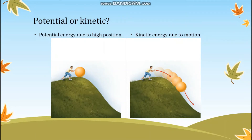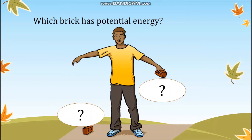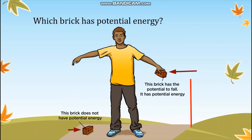Next, you have to guess which one of the two bricks the boy is holding has potential energy. There are two bricks: one is on the ground at ground level, and one is being held by the boy up to some height. Which one has potential energy? The correct answer is the brick being held by the boy — it has the potential to fall. The brick on the ground does not have potential energy.